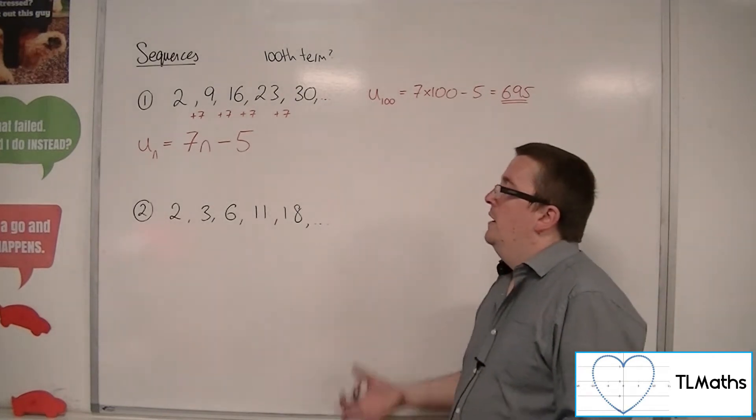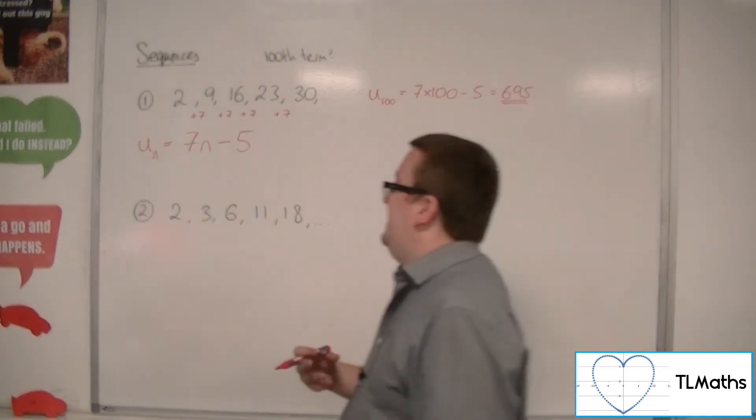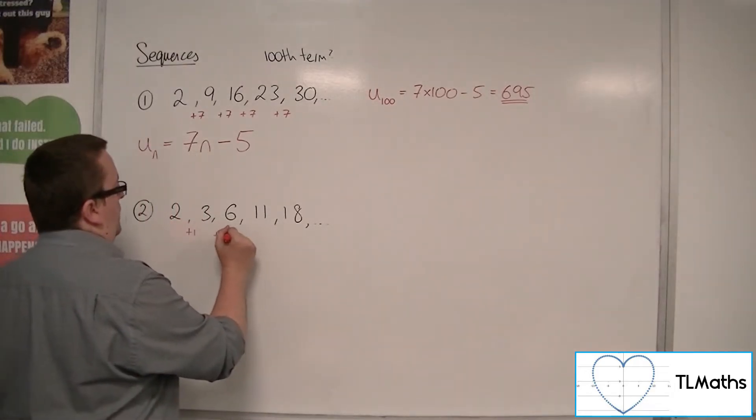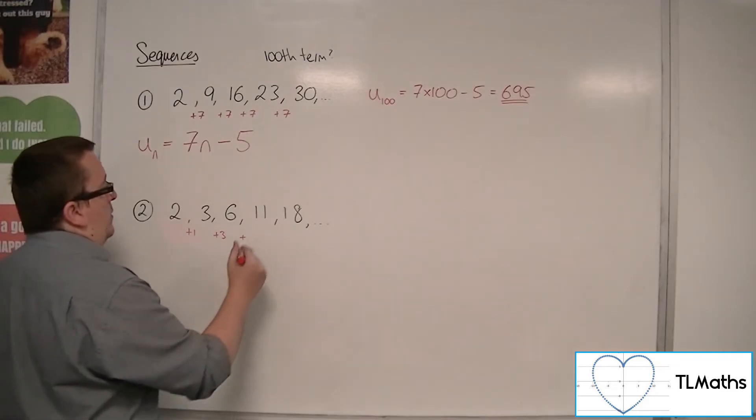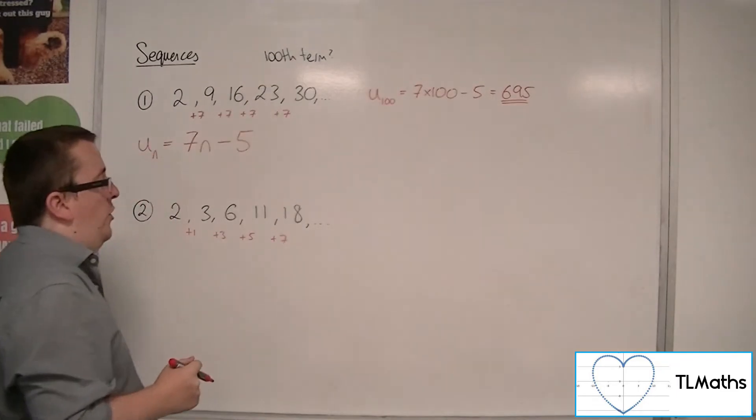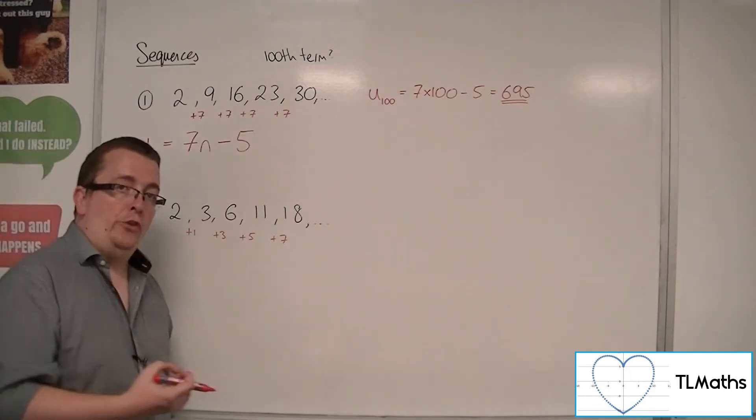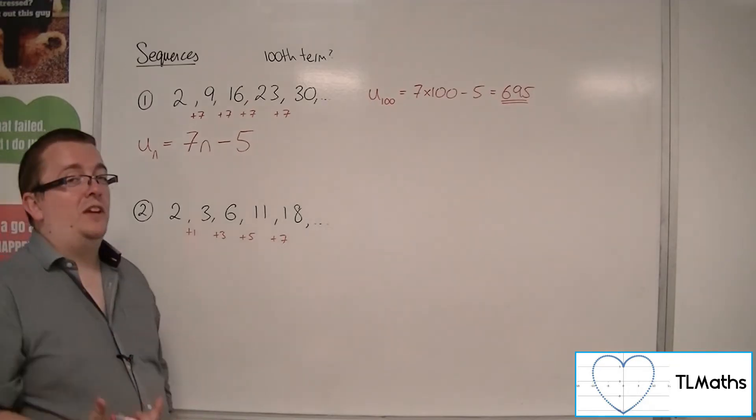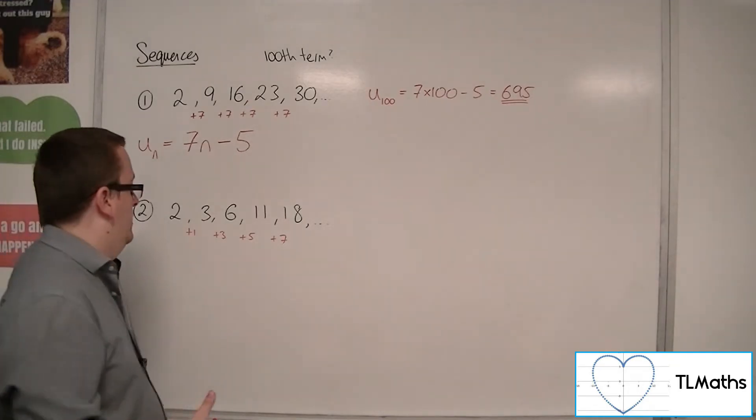Now number 2 has 2, 3, 6, 11, 18. So the fact that we're going up in 1 there, then we're going up in 3s, and then we're going up with a 5, and then with a 7, because we don't have that constant that we're adding on each time, that means it's going to be a little bit more complicated.